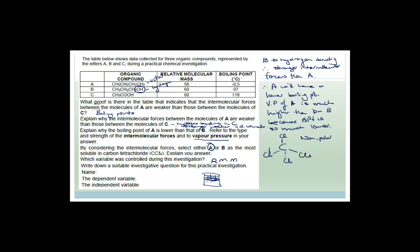Which variable was controlled during this investigation? Obviously it was the relative molecular mass — they even mentioned at the beginning that they tried to keep the molecular mass the same. Now write down a suitable investigative question for this practical investigation. What we want to know is how the structure affects the boiling point.